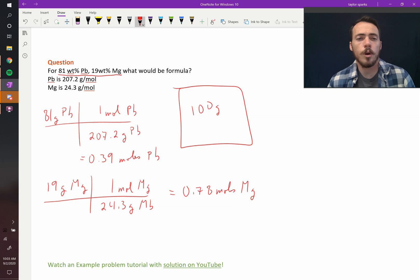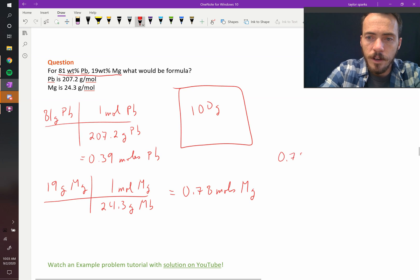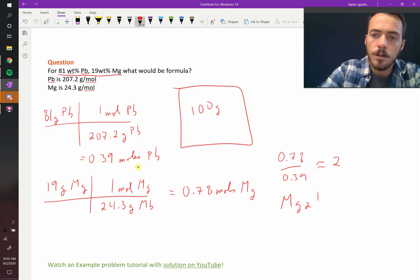Alright, so we know the raw amount of lead and the raw amount of magnesium in moles. How does this help us? Well, for one thing, hopefully you can already see it, there's 0.39 and there's 0.78, so if you multiplied 0.39 by 2, you would get 0.78. So there's twice as many moles of magnesium as there are lead. You could also just divide it. You could say 0.78 divided by 0.39 is approximately 2. And so, therefore, there's twice as many moles of magnesium. The formula must be Mg2Pb.